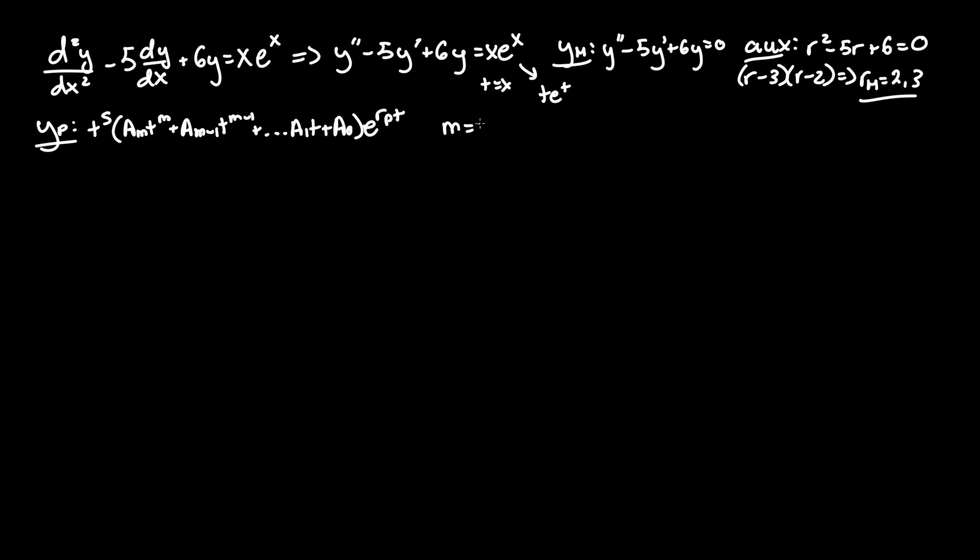From this we can say two things. One, that m equals 1 as there's only t to the power of 1 on the right hand side. And rp equals 1 as well since it's just e to the t. Does this equal anything from r homogeneous? No, because 1 doesn't equal 2 or 3. So there is no repeated root. Therefore s equals 0.